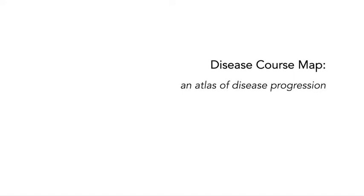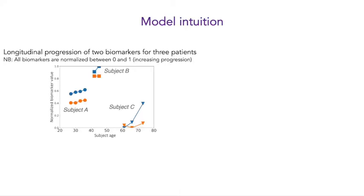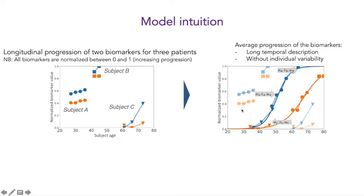By leveraging all these challenges, we've been able to develop a new tool that we call the disease course map, which is basically an atlas of disease progression. The model takes longitudinal data of many subjects — here is an example of three subjects, A, B, and C, each seen a repeated number of times. Subject A has been seen four times, and at each visit we've recorded two different biomarkers. Based on that, the model is able to recombine this individual data into a long-term history of the disease showing the progression over a long period of time of each biomarker.